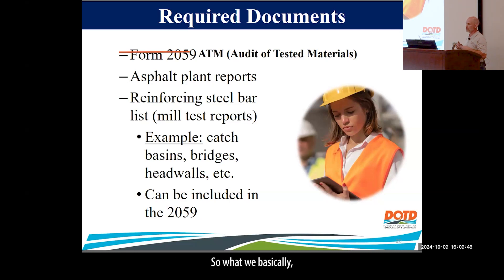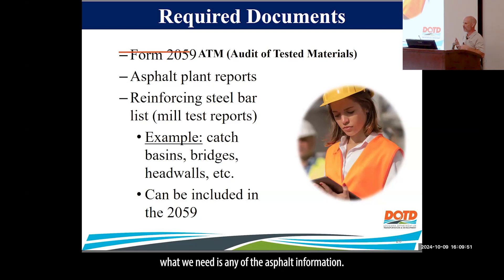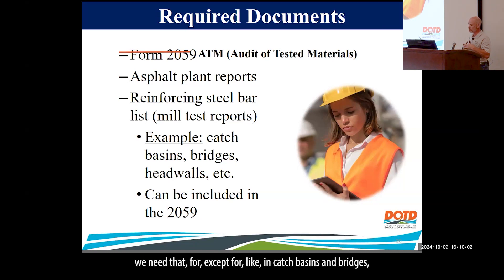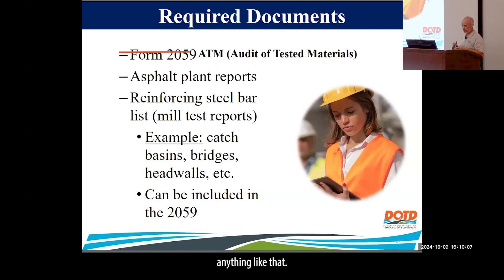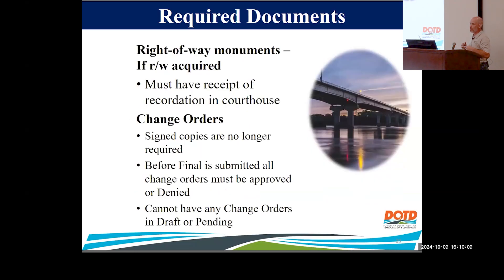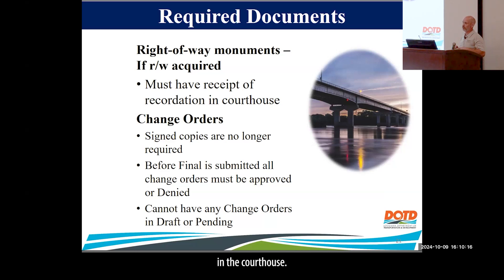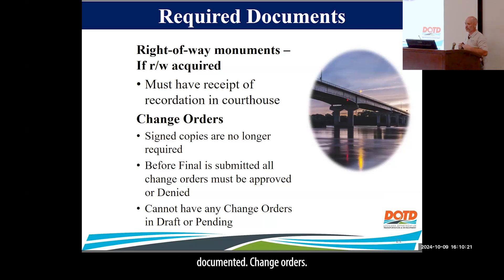What's in the 2059? We need any asphalt information: plant reports, roadway reports, job mixes, anything like that. If there's any steel being used on the project, we need that — except for steel in catch basins and bridges. If any right-of-way was acquired on the project, we must have a receipt showing it's recorded in the courthouse, along with the map and plat map where the new right-of-way was documented.